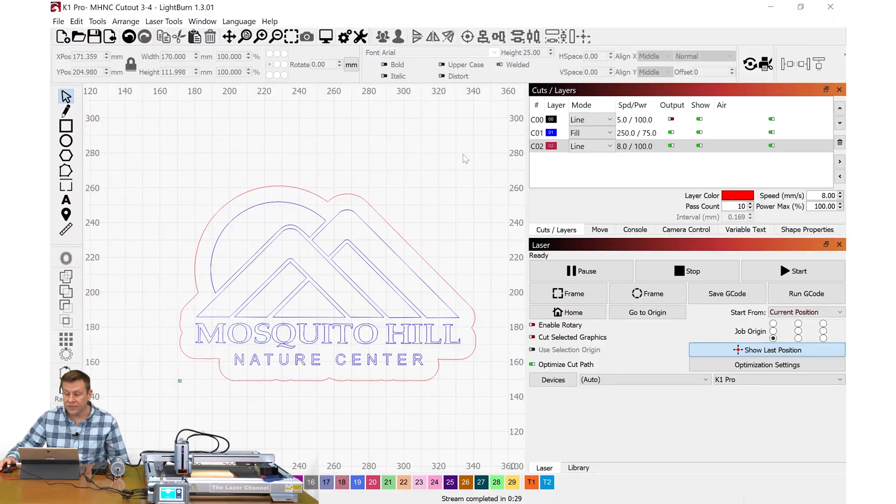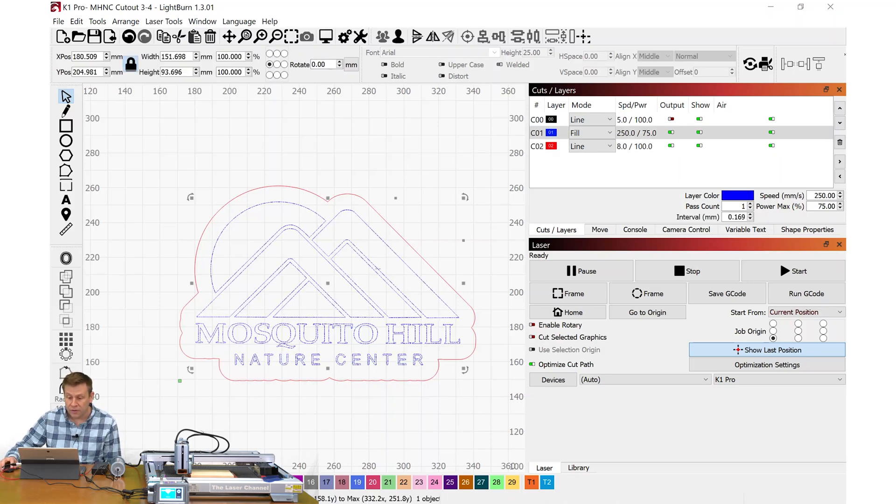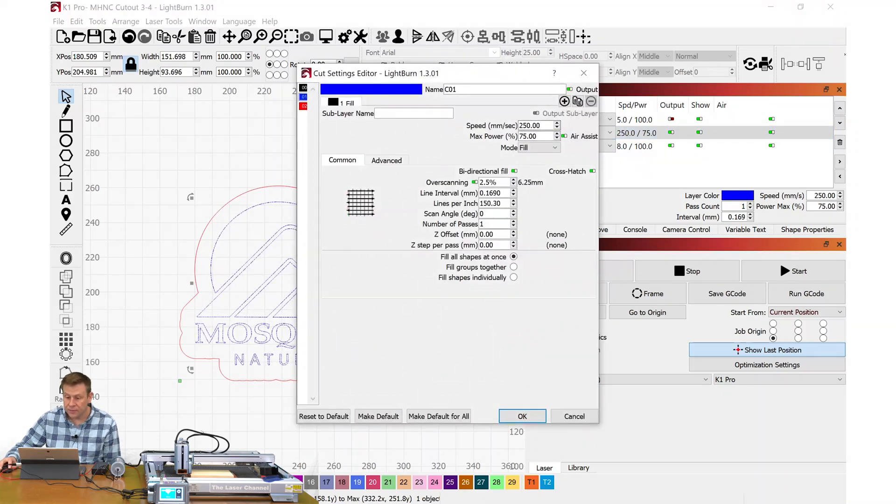Back in light burn, I selected my layers for using that three quarter inch pine board. For the blue engraving layer, when we go into there, I have a speed again of 250 millimeters per second. However, I cranked the power up to 75%. I do want to engrave deeper into this wood. I still have the lines per inch set at 150. This looks good.